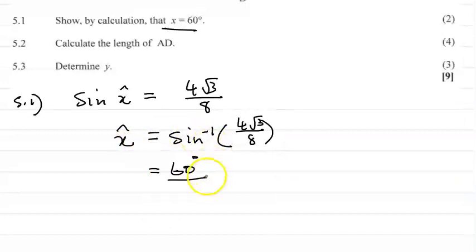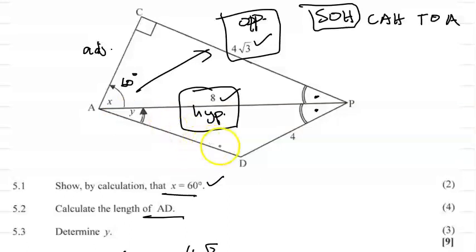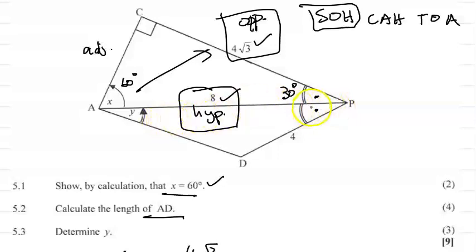Next, calculate the length of AD. Update your diagram: x is now 60 degrees. AD is in a non-right angle triangle, so we cannot use basic trig ratios. From the right angle triangle ACP, since x is 60° and the right angle is 90°, the remaining angle APC must be 30°. Since PA bisects DPC, angle APD is also 30 degrees.